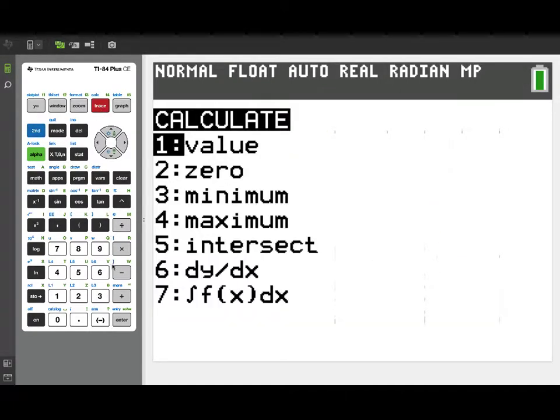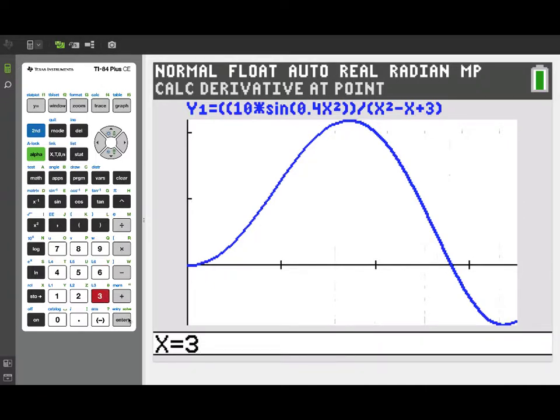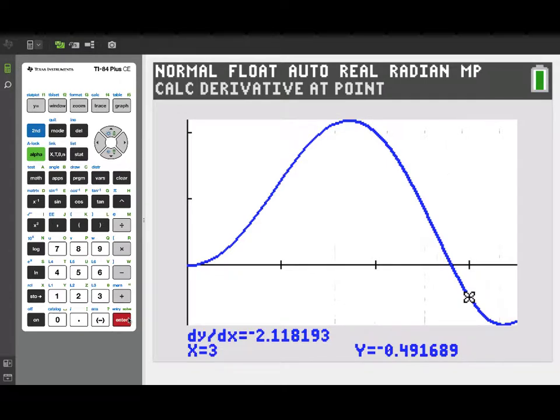We're first asked to calculate the acceleration, so I'm going to need the derivative of my velocity function. So, I'll pull that off the calculate menu, enter x equals 3 for the time, and that derivative value of negative 2.118 gives us our acceleration value.